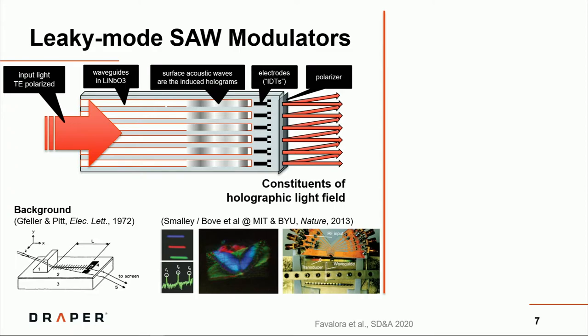Unlike a spatially multiplexed display in which you need many groups of pixels, each of which is dedicated to a view, here, each pixel can simultaneously project 50 or 100 views at the same time, depending on your drive signal. This has been around a while. In the early 70s, people have worked with this sort of modulator. And more recently, Smalley and Bove and others at MIT and BYU have been applying this in a variety of ways to future holographic displays.